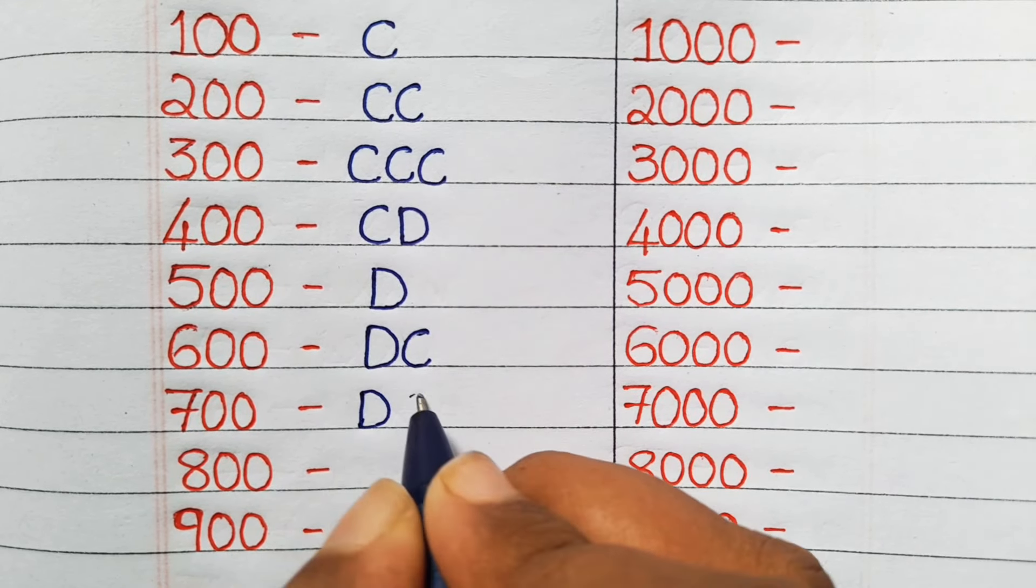For eight thousand, VIII with a line. For nine thousand, IX with a line. And for ten thousand, X with a line. So these are all the Roman numbers of hundreds and thousands denoting letters.